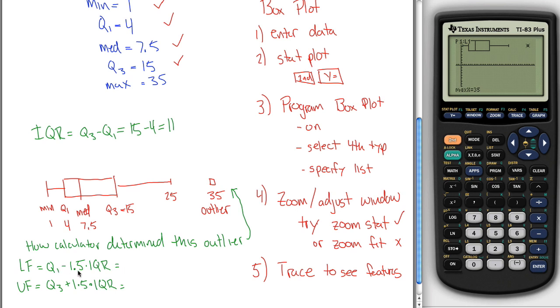So Q1 was equal to 4. Q3 was equal to 15. And then from the 4, I want to subtract 1.5 of these 11s. And from the 15, or to the 15, I want to add 1.5 of these 11s. So 1.5 times 11 is what? 16.5.